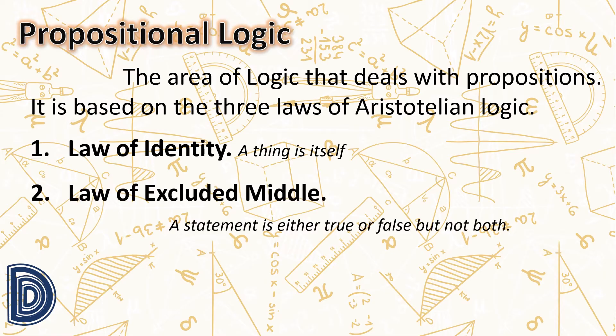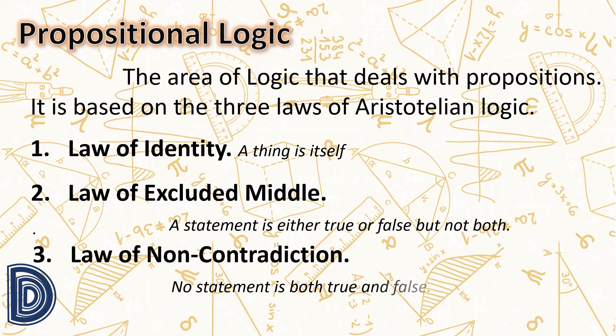Next is the law of excluded middle: something either exists or does not exist, or every statement is either true or false but not both. The third one is the law of non-contradiction: nothing can both exist and not exist at the same time and in the same respect, or no statement is both true and false.